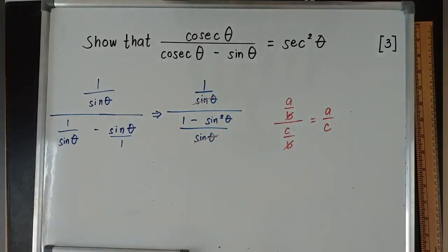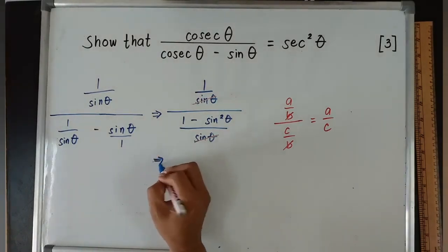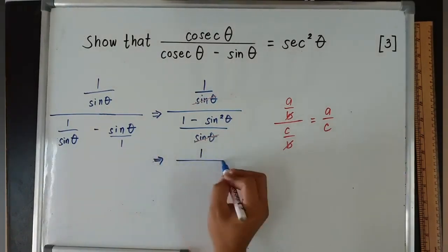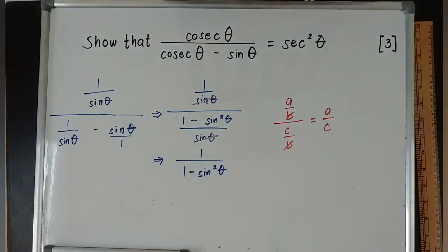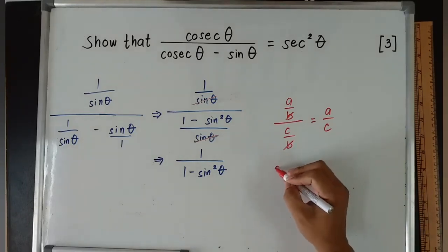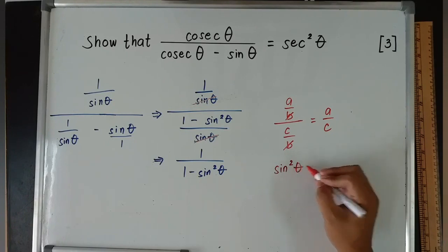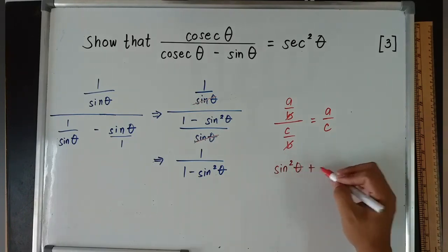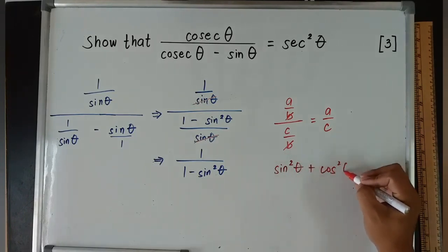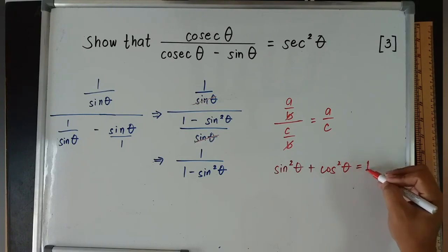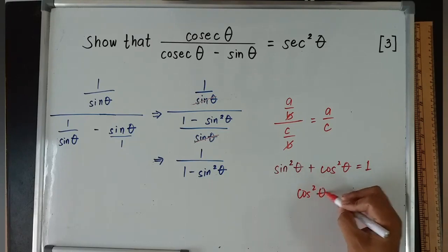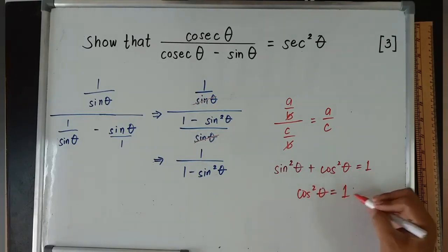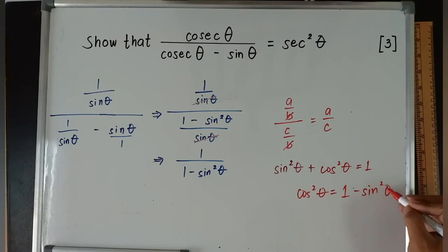Therefore, I can cancel out. This gives you an answer of 1/(1 - sin² θ). And also remember that in your trigonometric identities, there is an identity like this.